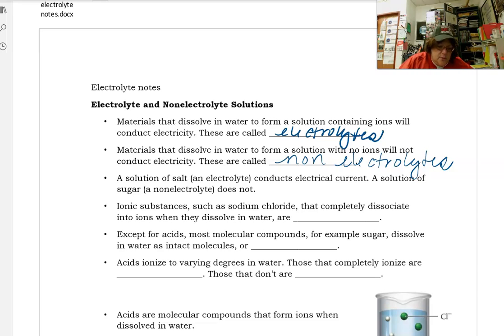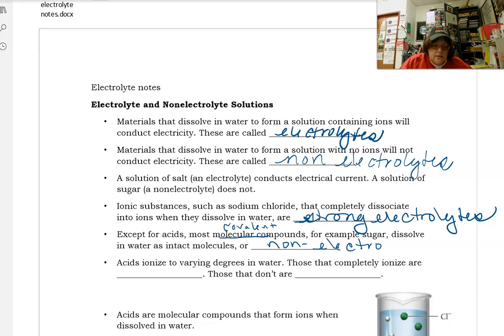Ionic substances that completely dissociate are what we call strong electrolytes. Except for acids, most molecular compounds, for example sugar, molecular compounds being covalent, dissolve in water as intact molecules and they are non-electrolytes. Acids ionize to varying degrees in water. Those that completely ionize are strong electrolytes. Those that don't are weak.